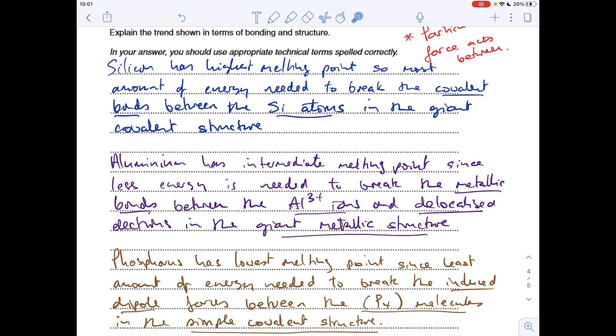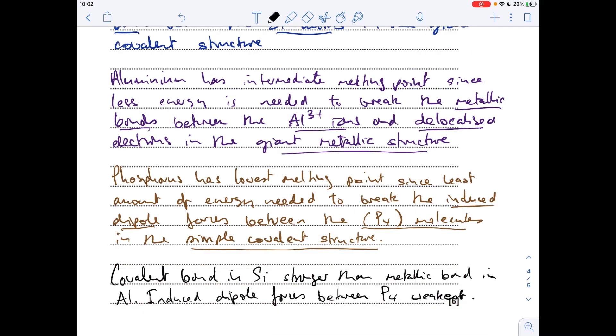OK, so for phosphorus, I'm saying phosphorus has the lowest melting point, so the least amount of energy is needed to break. Here's the force, the induced dipole forces, because phosphorus is a non-polar molecule. The force acts between, you just need to say phosphorus molecules, but it's actually got the formula P4, so try and get that in if you can. The P4 molecules in the simple covalent structure. And my final statement would be something like this: the covalent bond in the silicon must be stronger than the metallic bond in the aluminium, and then the induced dipole forces between the phosphorus molecules are the weakest.